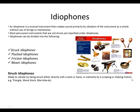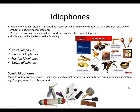The first one we look at is struck idiophones. They are made to vibrate by being struck either directly with a stick or a hand, or indirectly by a scraping or shaking motion. For example, the triangle, the wood block, and marimbas.